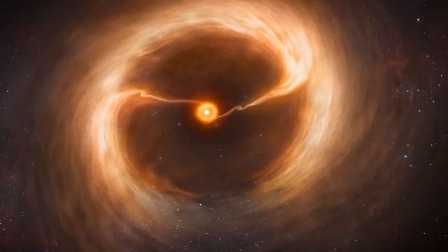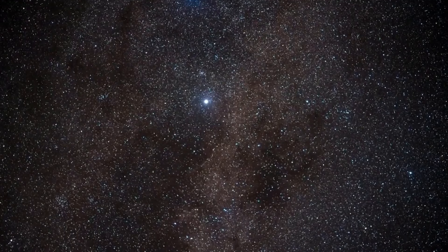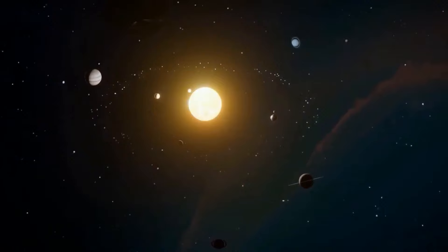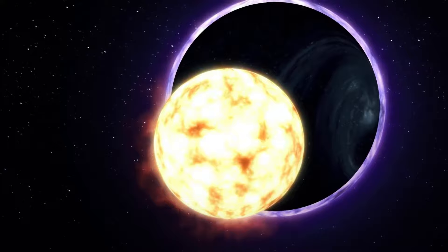When we see red giants, we're looking at stars that are in the twilight of their lives. Turns out, for stars with masses less than eight times that of the sun, like our sun, carbon is the heaviest material they can create.